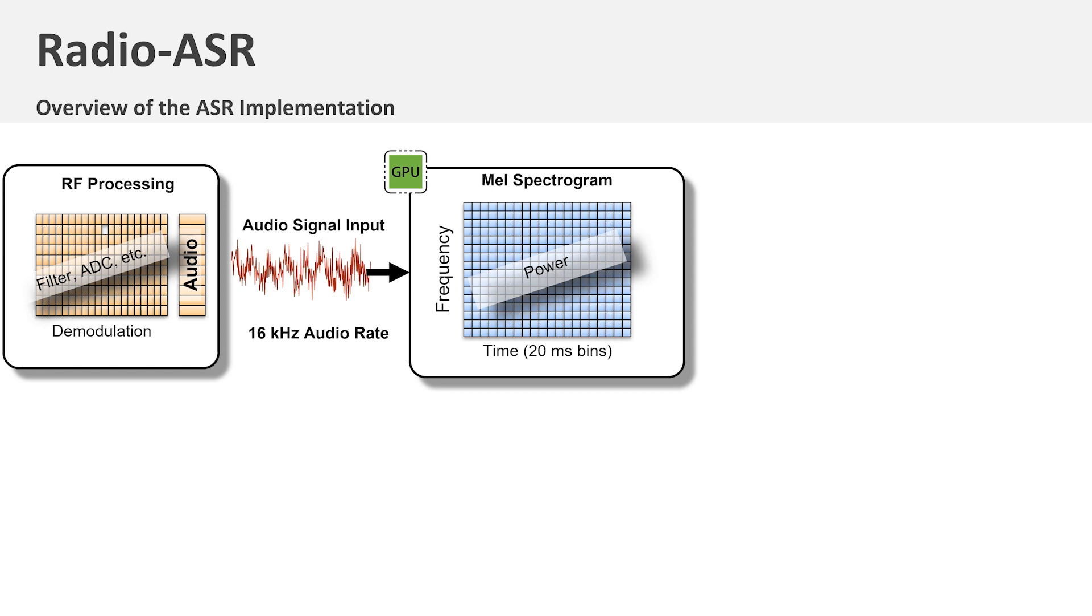The demodulated audio waveform is passed to the GPU, which computes a MEL spectrogram, a special purpose spectrogram for analyzing human speech.